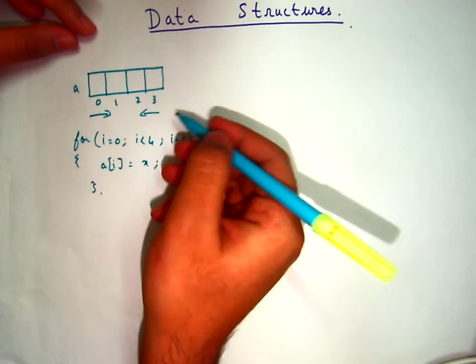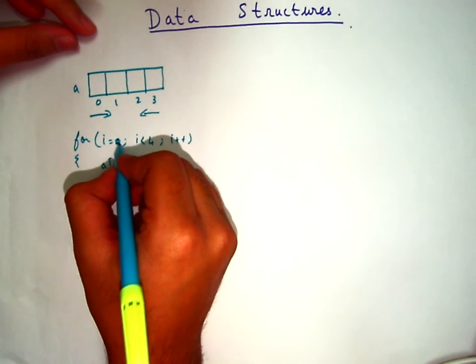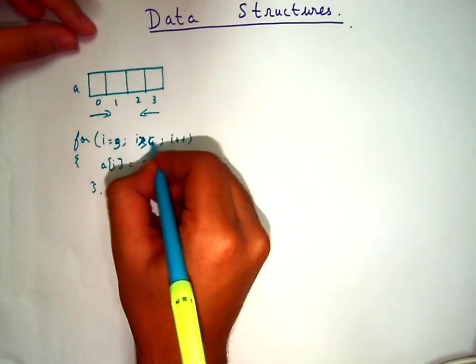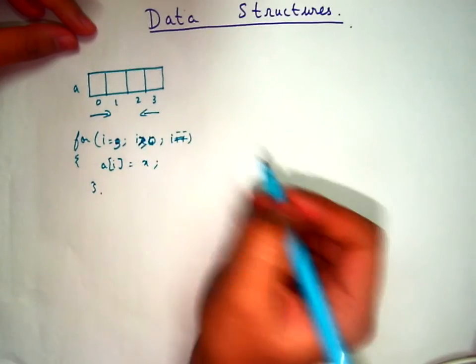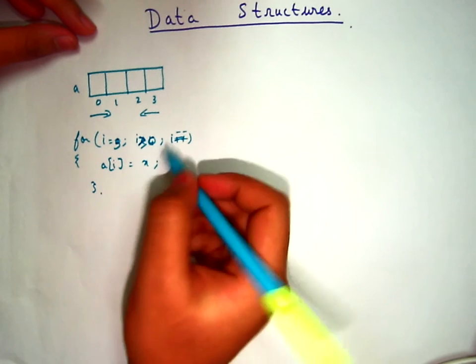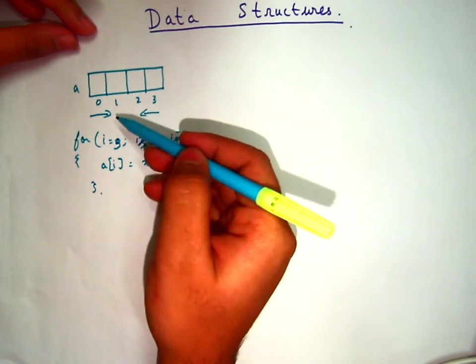Suppose we want to fill the array in this direction, we can just change the code to i equals 3, i greater than or equals 0, i minus minus, and a of i equals x, where x is some integer variable. Through this code we can fill the array in this direction.